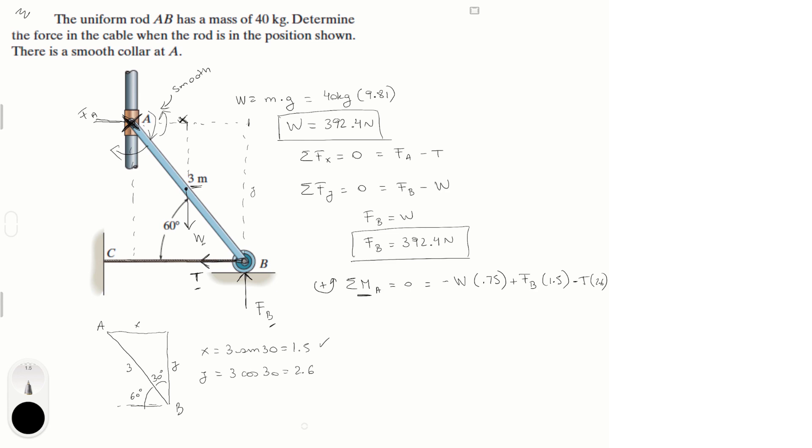So now that we have the equation let's just do it. This is basic algebra: 392.4, we know the weight, negative times 0.75, that is a 5 I swear, plus 392.4 times 1.5 minus T times 2.6. So solve for T and you should get that is equal to 113.13 newtons, and that is the tension of the cable to have the rod at the position shown. Final answer.